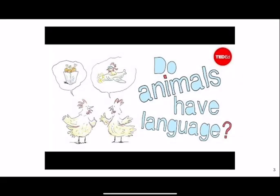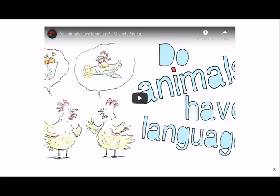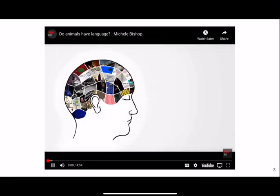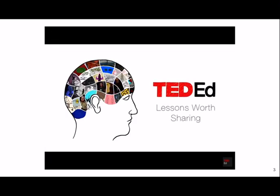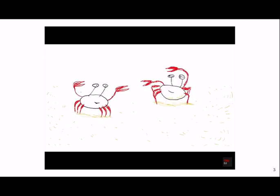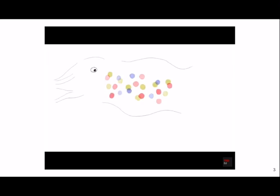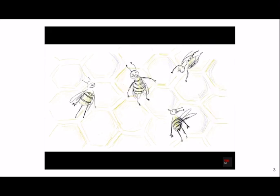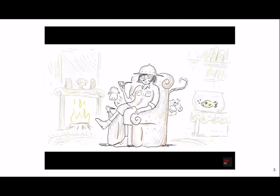All animals communicate. Crabs wave their claws at each other to signal that they're healthy and ready to mate. Cuttlefish use pigmented skin cells called chromatophores to create patterns on their skin that act as camouflage or warnings to rivals. Honeybees perform complex dances to let other bees know the location and quality of a food source. All of these animals have impressive communication systems — but do they have language?